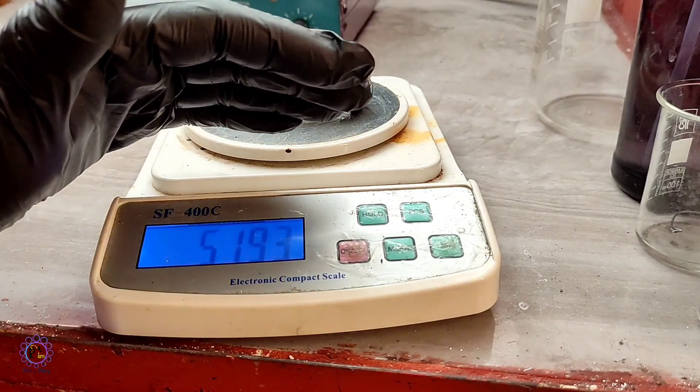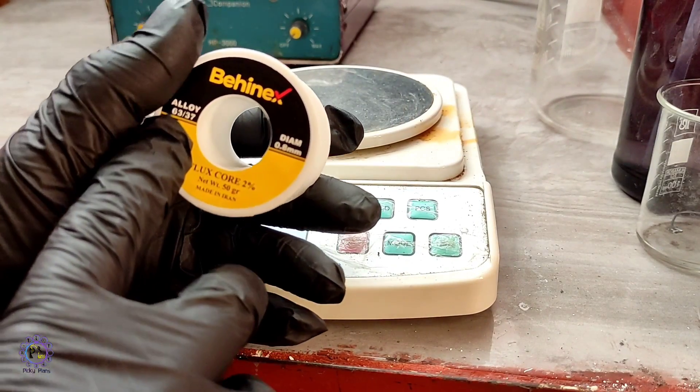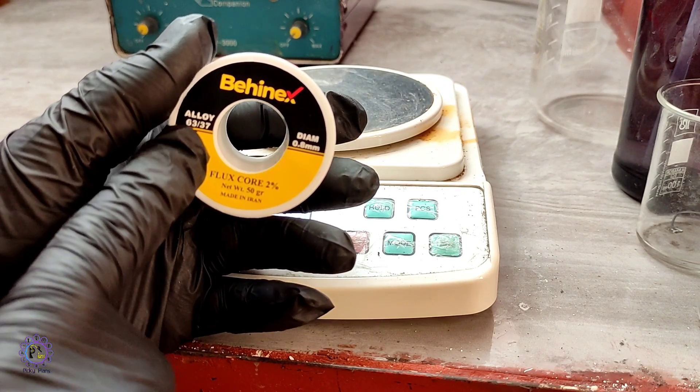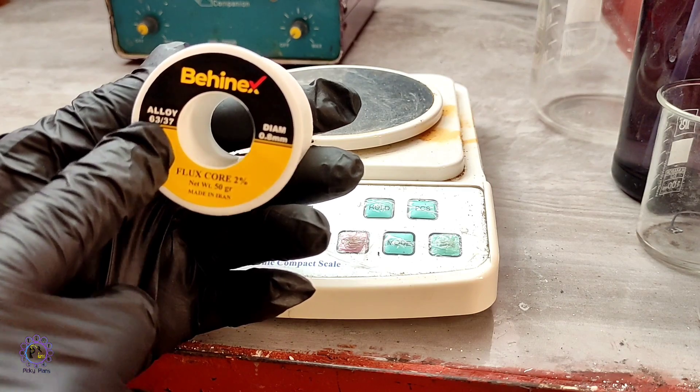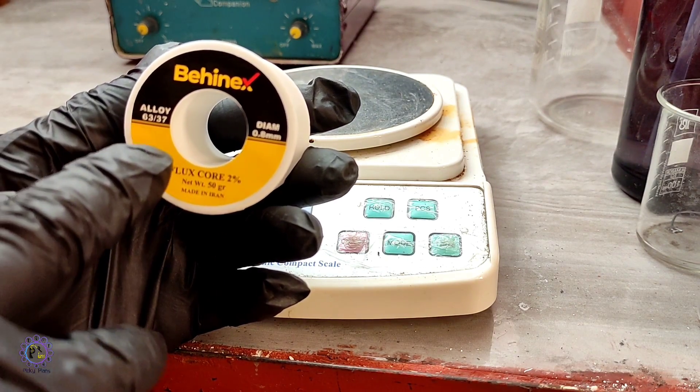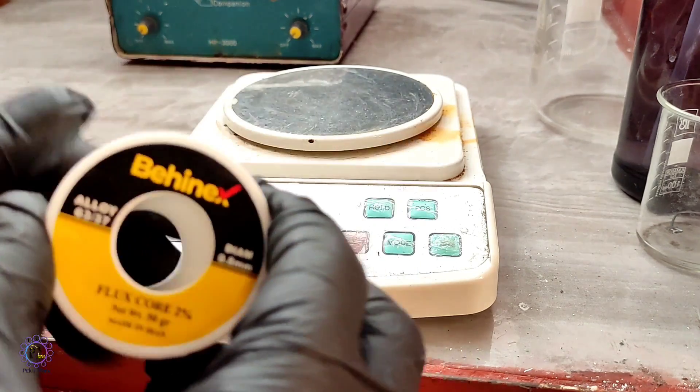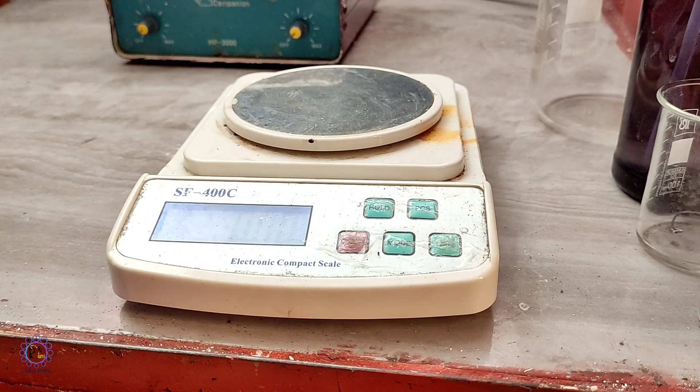This is about 52 grams of solder wire. The label says that tin content of this solder wire is 63% by weight and the rest is lead metal. So I have a decent amount of tin metal to start extraction process, which is about 31 grams of tin metal alloyed with lead.